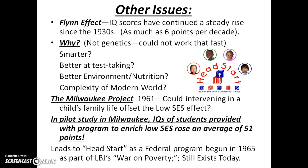Let's talk about the Flynn effect — the idea that IQ scores have continued to rise steadily since the 1930s, in some cases as high as six points per decade. Nobody's sure why. If it were purely genetics, it probably could not change that quickly. Possible explanations include: we're simply smarter than before; we're better at taking tests; better environment and nutrition; or the complexity of the modern world has caused the brain to develop. Also, IQ wasn't really measured prior to 1930, so it may have been rising before that too.